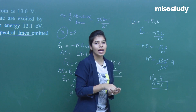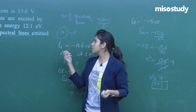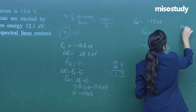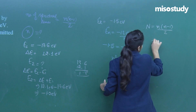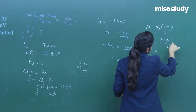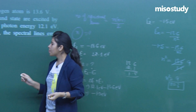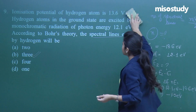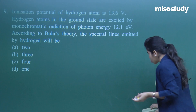Number of spectral lines = N(N-1)/2 = 3×2/2 = 3. So option B with 3 spectral lines is the correct answer. The approach is to first find the excited state N, then apply the spectral lines formula.